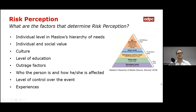What are the factors that determine risk perception? We can look at this from the individual level using Maslow's hierarchy of needs. We can also look at the individual and social value of risk perception. Furthermore, we can consider culture, level of education, age factors, who the person is and how they are affected, and their level of control over events and experiences.